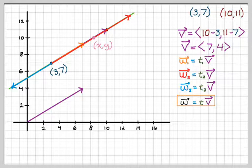And so what I'm going to do is the vector w that I keep dealing with is actually just the vector with initial point 3, 7 and terminal point x, y. So I can write w as x minus 3 comma y minus 7.